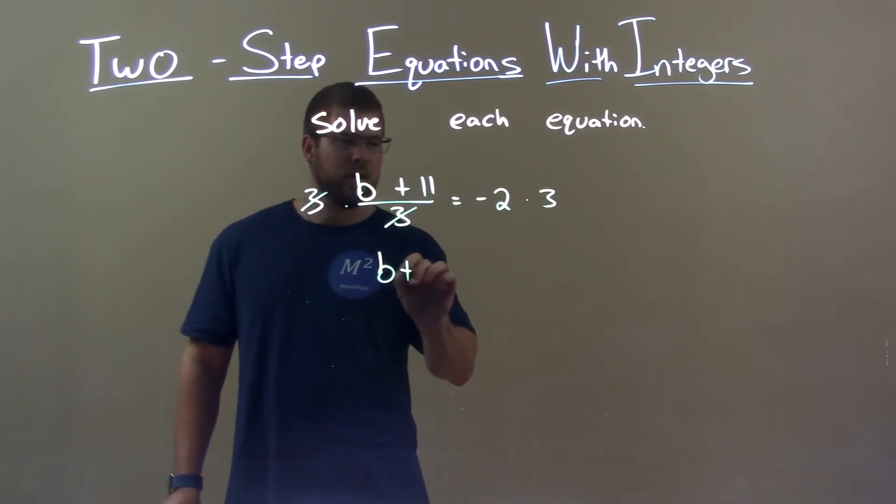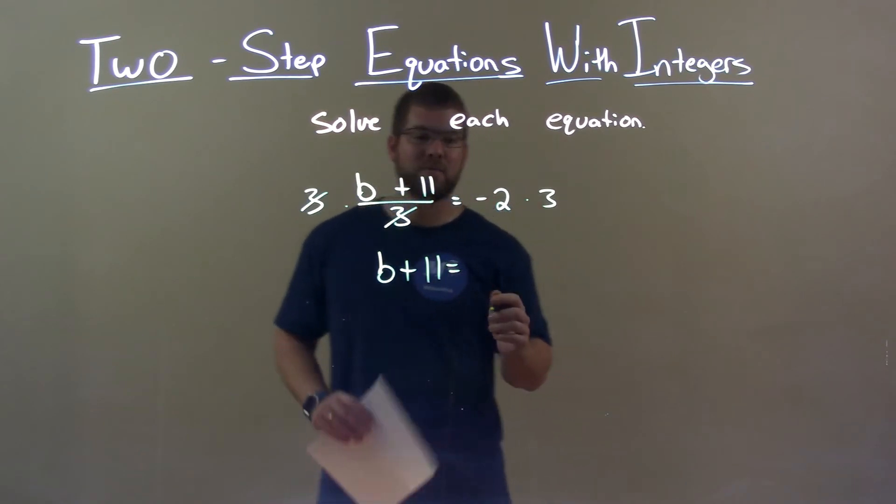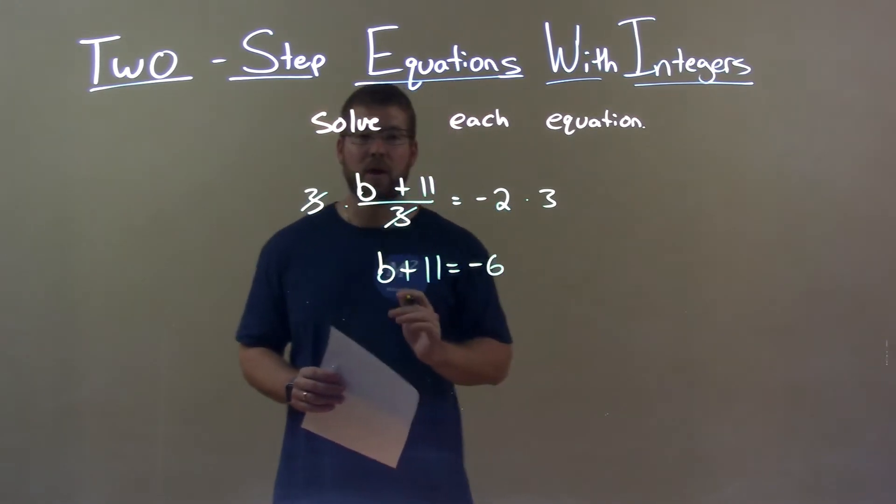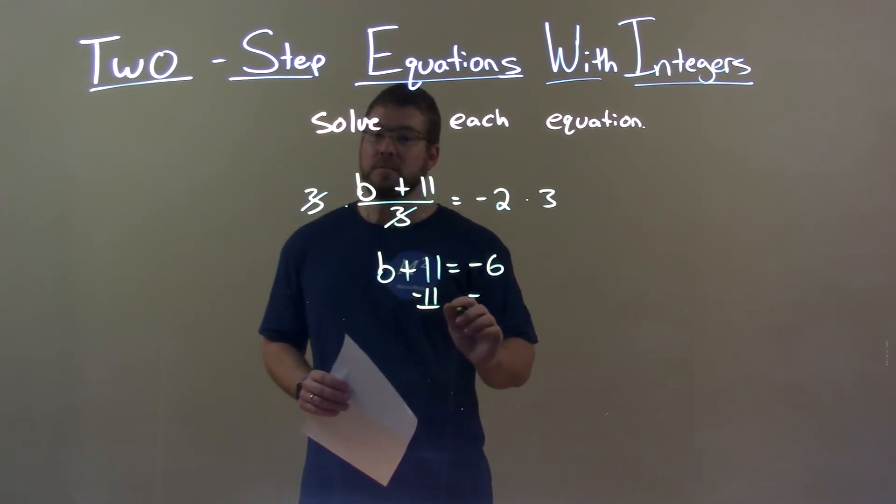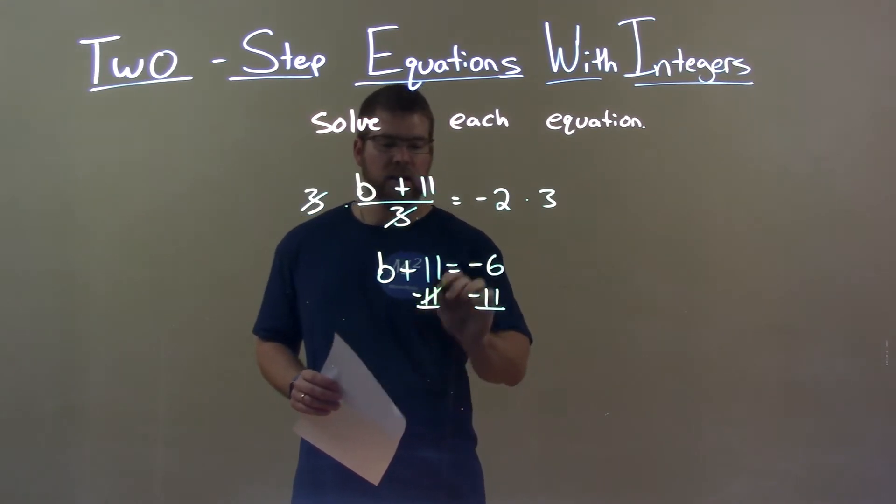We're left with b plus 11 by itself on the left, and negative 2 times 3 being negative 6 on the right. Now we subtract 11 from both sides because the opposite of addition is subtraction.